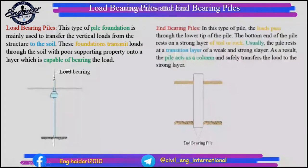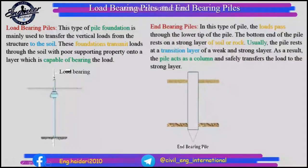End bearing piles: in this type of pile, the loads pass through the lower tip of the pile. The bottom end of the pile rests on a strong layer of soil or rock, usually at a transition layer between a weak and strong layer. As a result, the pile acts as a column and safely transfers the load to the strong layer.